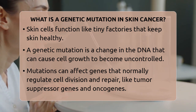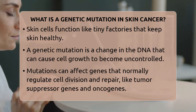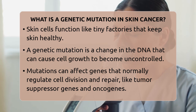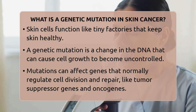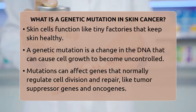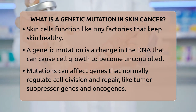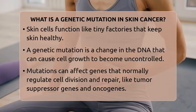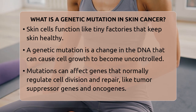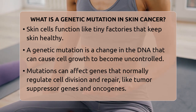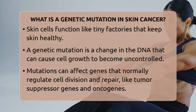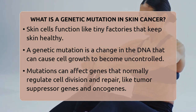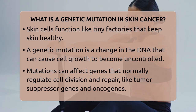These mutations often happen in genes that control critical functions. For example, some genes act as brakes, stopping cells from dividing too much or repairing damaged DNA. When mutations affect these genes, such as tumor suppressor genes, the brakes fail. Conversely, mutations can turn on genes that promote cell growth, known as oncogenes, causing cells to multiply rapidly.